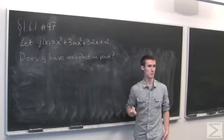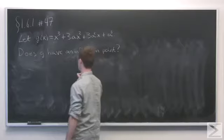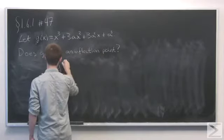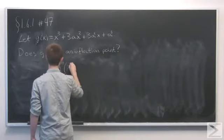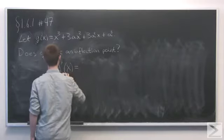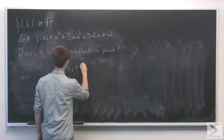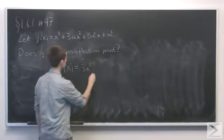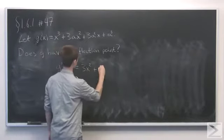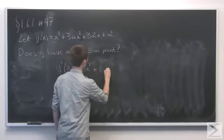To find the inflection points, we first need to compute the second derivative. So if we start out by computing the first derivative, we see that g prime of x is 3x squared, plus 2 times 3, or 6, ax.